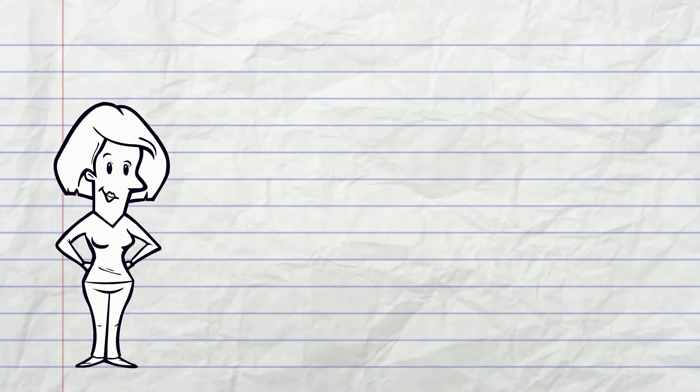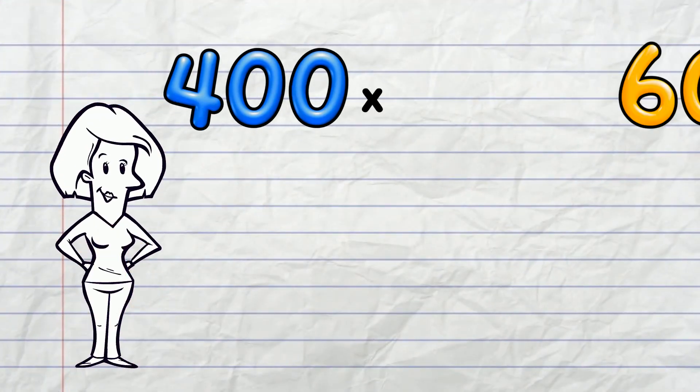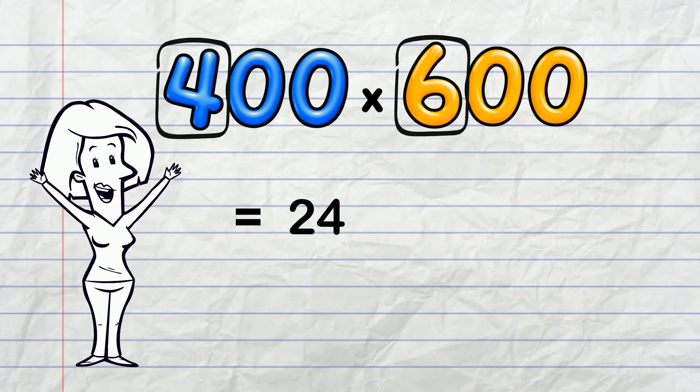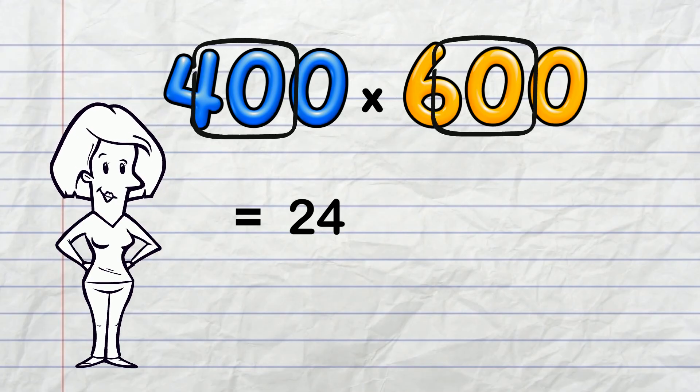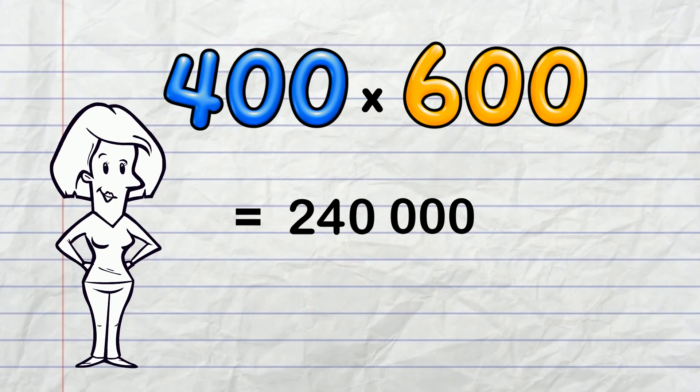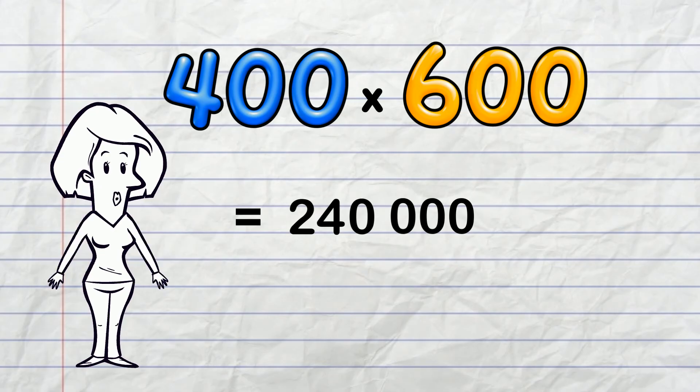Let's say you had to solve 400 times 600. You'd say 4 times 6 is 24, and then you'd put in those zeros, all 4 of them. And you get 240,000!